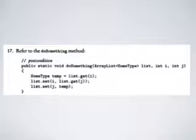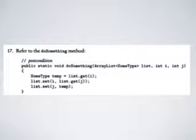Refer to the doSomething method. It is public static and does not return anything. Its input has three parameters: the first is an ArrayList of some type called list, the second input is integer i, the third input is integer j. The content of doSomething is: a variable of some type called temp is equal to list.get(i), then we do list.set(i, list.get(j)), and finally list.set(j, temp).